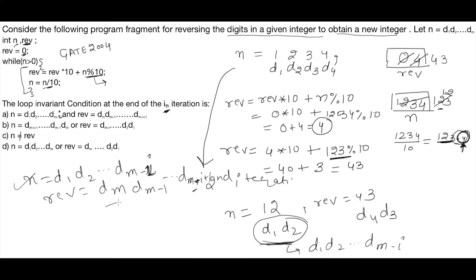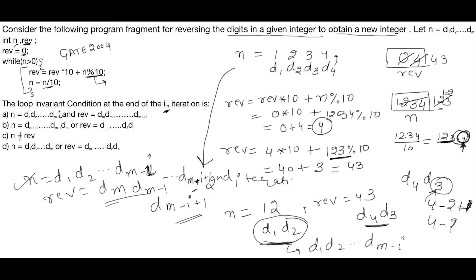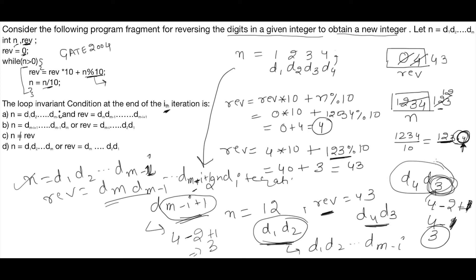Now checking the REV value: REV = dm, dm-1, up to d(m-i+1). After the second iteration, REV became d4 d3. d3 is d(4-2+1) = d(m-i+1) where m=4 and i=2, giving d3. So d4 d3 corresponds to dm down to d(m-i+1). This condition is satisfied — the value stored at REV is dm dm-1 down to d(m-i+1).